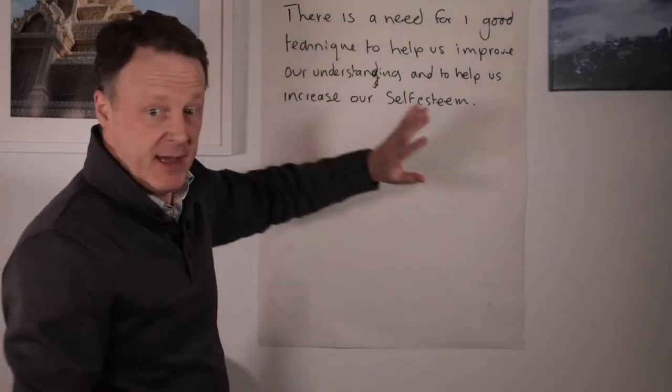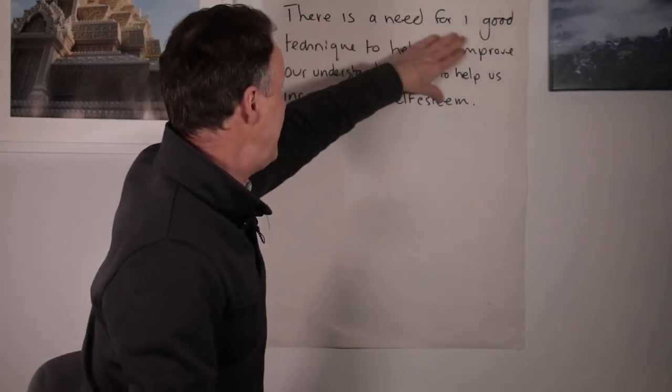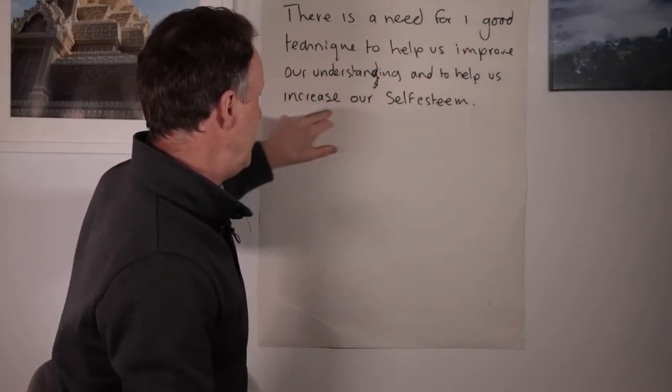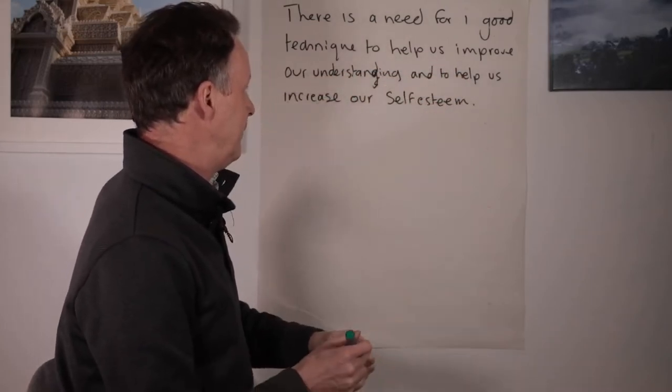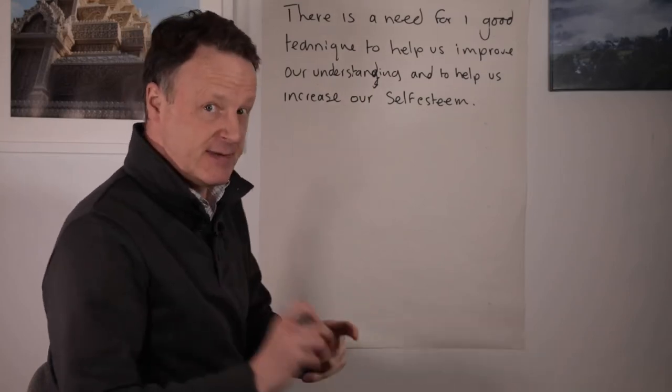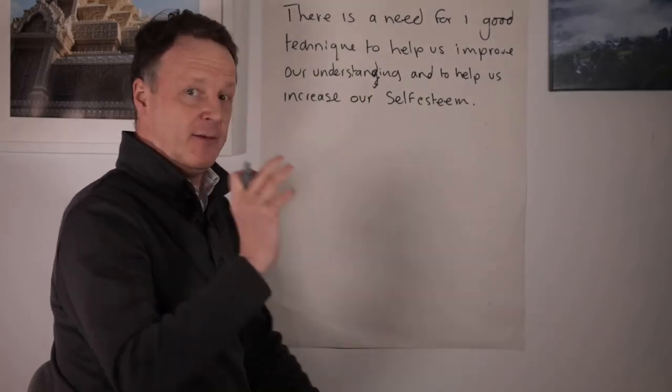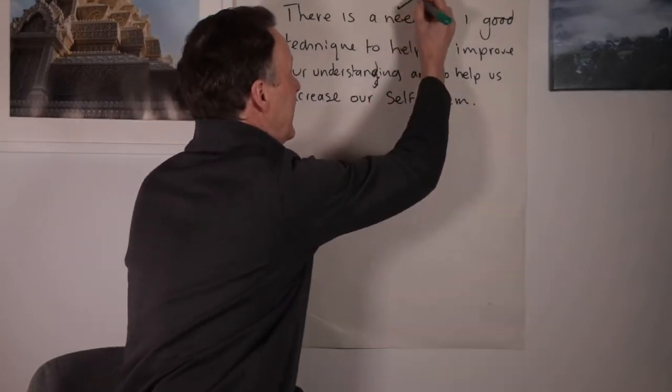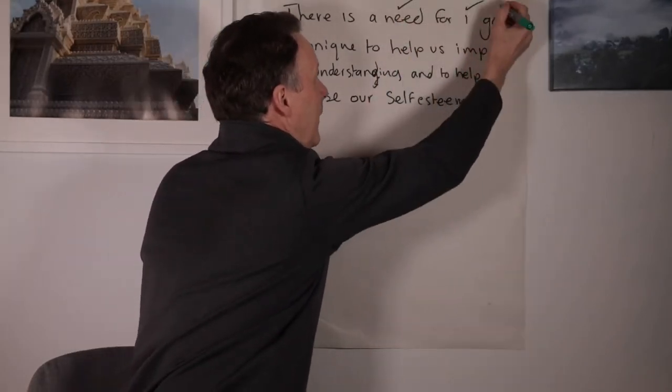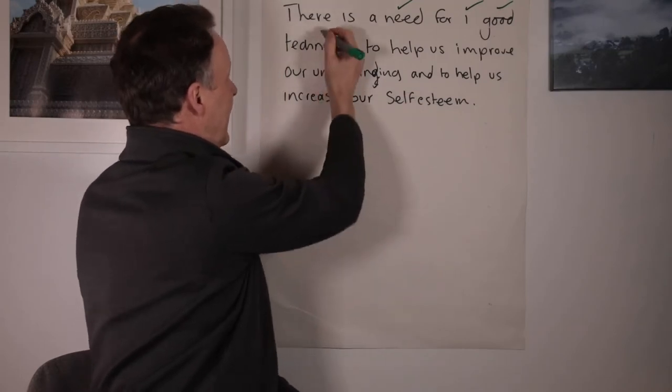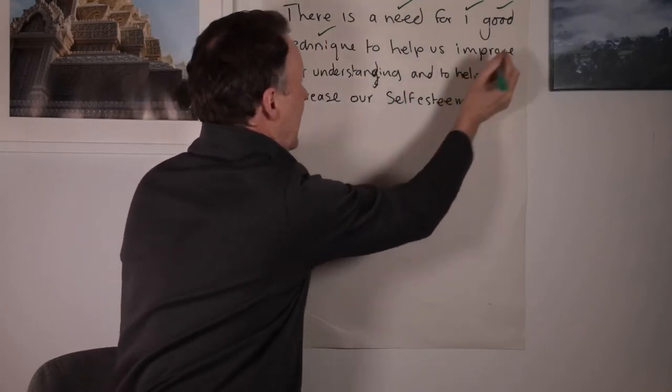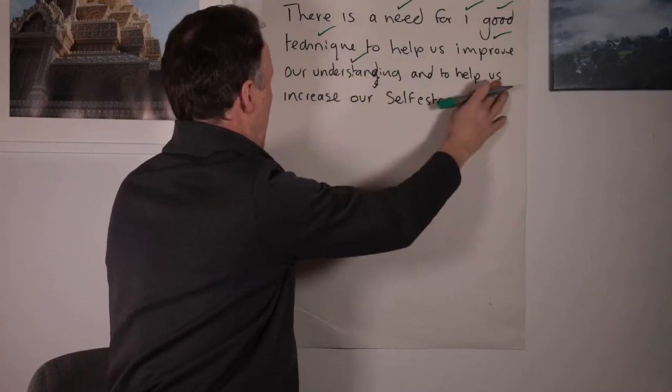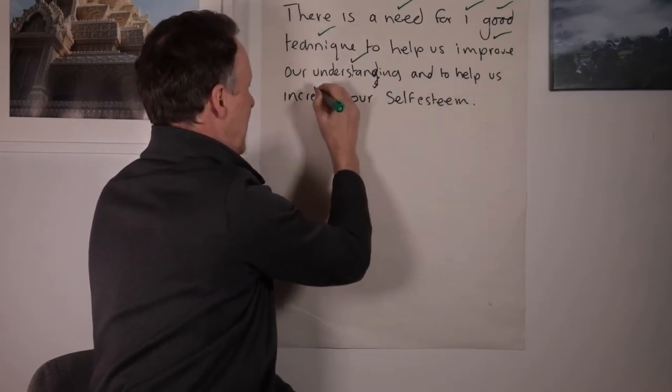So here's the information. There's a need for one good technique to help us improve our understanding and to help us increase our self-esteem. Now, deep filtering number one. So I'm going to just search for what I think is the important information. And for me here, it would be need one good technique. I don't need that. I'd probably keep improved. I'll definitely keep improved, definitely keep understanding. I don't need that. And I'd increase self-esteem.